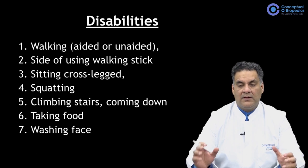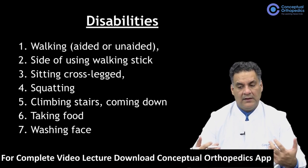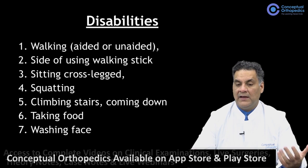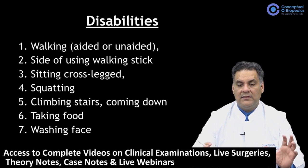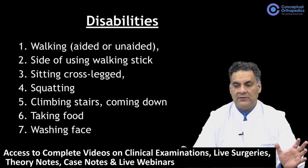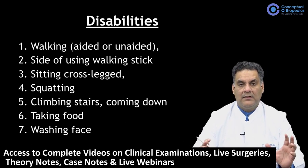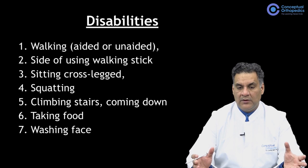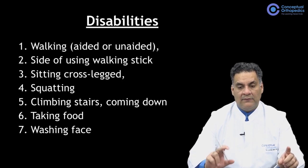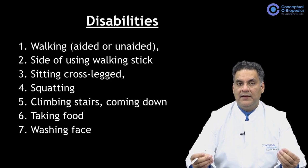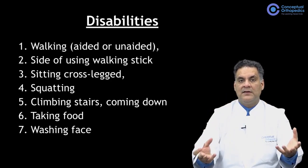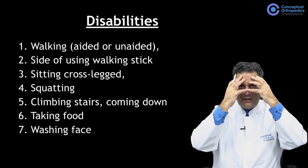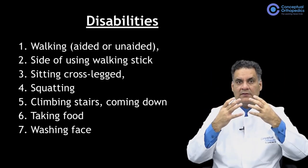For disabilities, note whether the patient is walking aided or unaided. If aided, specify whether it is a walker, stick, or cane, and whether the cane is used on the same or opposite side. Ask about sitting cross-legged or squatting, going up and down stairs, and which position is more difficult. Also assess the ability to eat food, which involves elbow flexion and shoulder abduction, and the ability to wash the face.